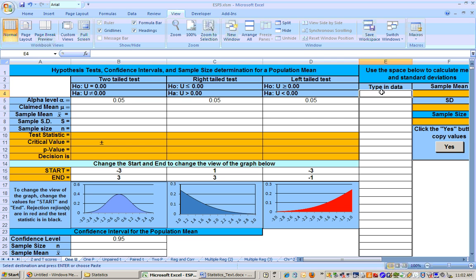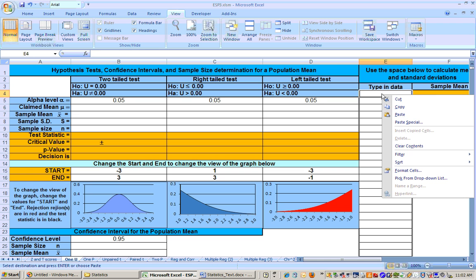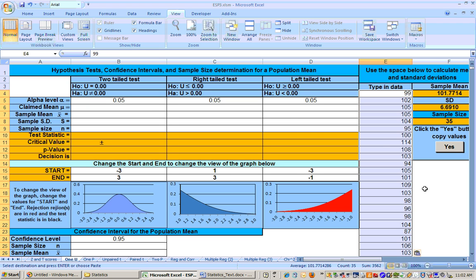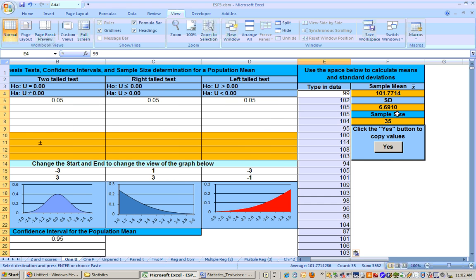We're going to be on the 1 mu sheet, which is the sheet that we use for part of this chapter. Right here on this sheet, where it says type in your data, that's where you want to right mouse click and paste special as values. As soon as we put that in there, we have the point estimate right here. The point estimate for the population mean is the sample mean, which is $101.77.